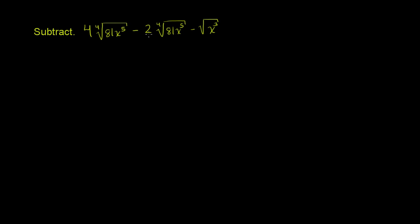We're asked to subtract all of this craziness over here. And it looks daunting, but if we really just focus, it actually should be pretty straightforward to subtract and simplify this thing. Because right from the get go, I have 4 times the fourth root of 81x to the fifth, and from that I want to subtract 2 times the fourth root of 81x to the fifth.